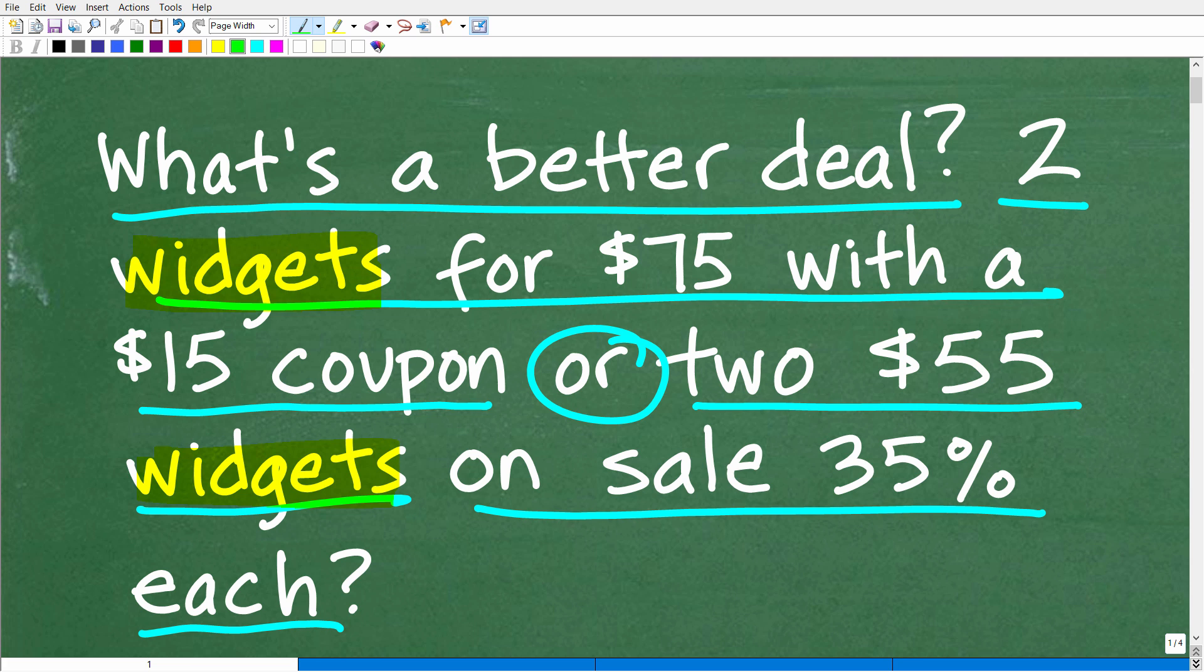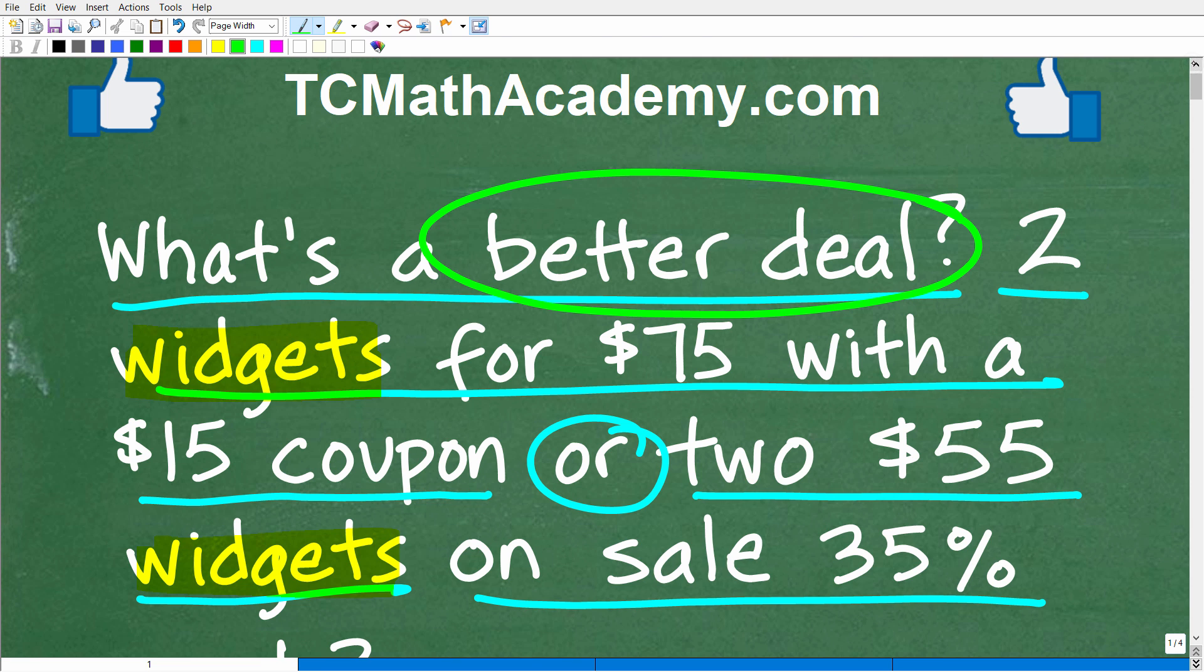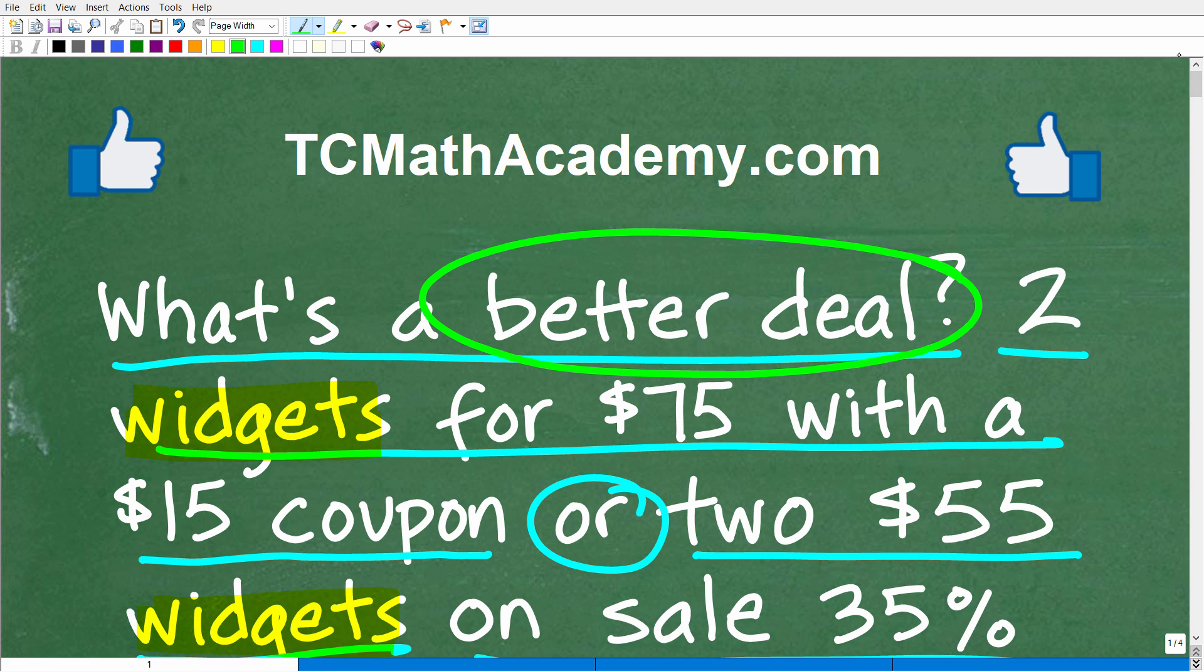Let's go ahead and define what is a better deal. The better deal is the one that costs you the least amount. It's the one that we're going to save the most money. Feel free to use a calculator to figure this out and put your answer into the comment section.